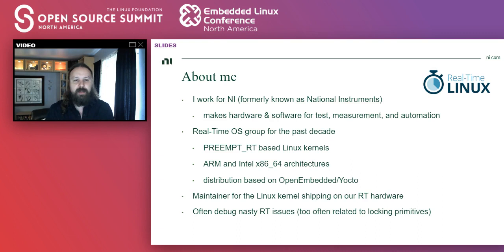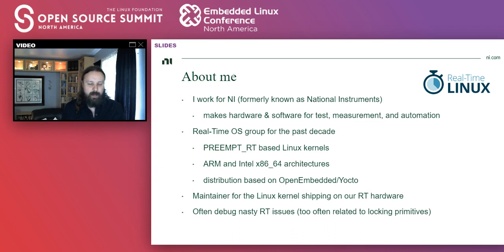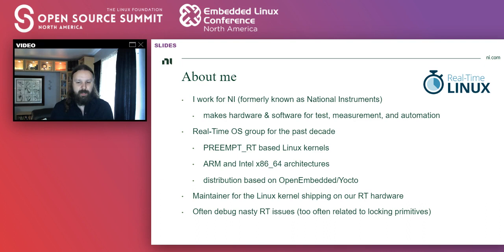To give you a bit of context about me, I work for NI — we recently got rebranded from National Instruments to NI. NI makes hardware and software for test, measurement, and automation markets. I've been with the real-time OS group for the past decade or so, and we're using preempt RT-based Linux kernels on our real-time hardware. We're proud to support the real-time Linux collaboration project, and we use that on ARM and x86 architectures. We use OpenEmbedded and Yocto to build our distribution. For the past couple of years I've been the maintainer for the Linux kernel shipping on our RT hardware, and in that capacity I often debug nasty real-time issues — and too often they're related to locking primitives and conditional variables, which is the subject of today's presentation.